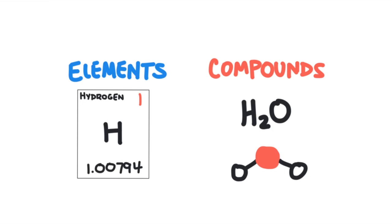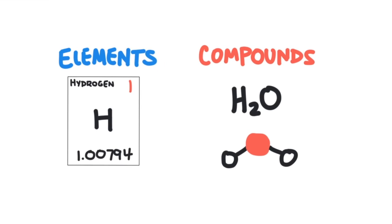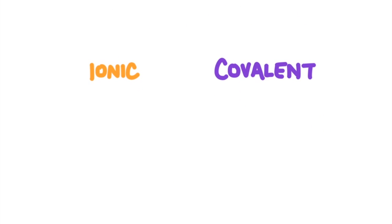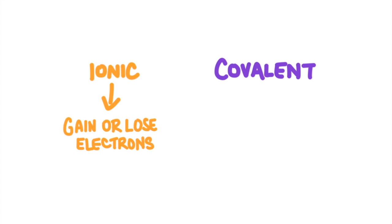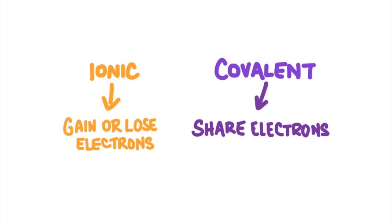Elements are single elements from the periodic table. Compounds are when elements have joined together with other elements through a chemical bond. There are two types of chemical bonds to create compounds: ionic bonds and covalent bonds. Ionic bonds are formed when elements gain or lose electrons, and covalent bonds are formed when elements share electrons.